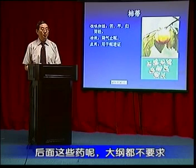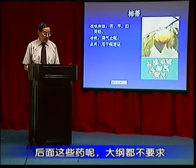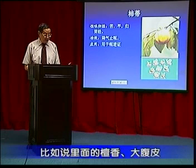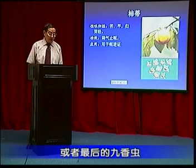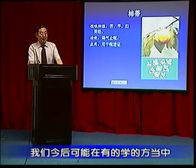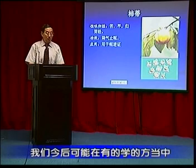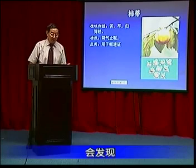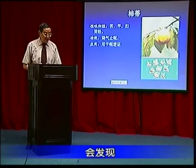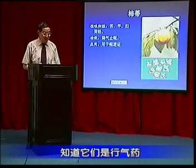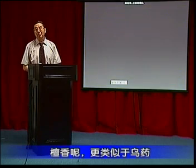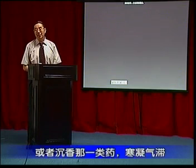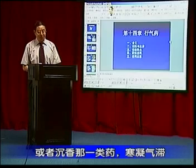由于我们这个书没有专门收这个降胃气的、治疗呃逆的药，所以不得已就把它放在了行气药这一章里面。但大家要知道，它是我们学这一章里面唯一的一个不是行气药的，是降胃气的药，所以这是要求一般理解。那么后面这些药，大纲都不要求，比如说里面的檀香、大腹皮，或者最后的这个九香虫。檀香更类似于乌药或者沉香那一类，含寒气滞，主要是这个疼痛比较重的气滞证，所以可以互相代替用。